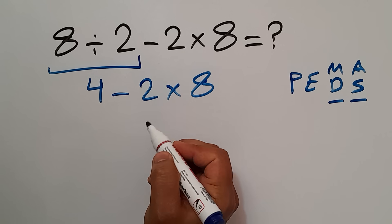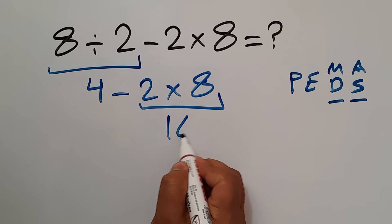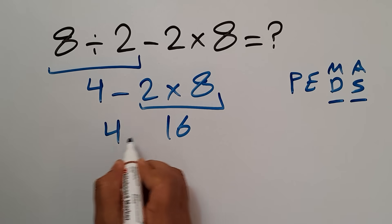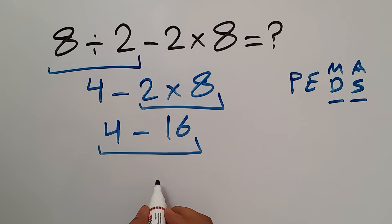2 times 8 gives us 16, so 4 minus 16, which equals negative 12.